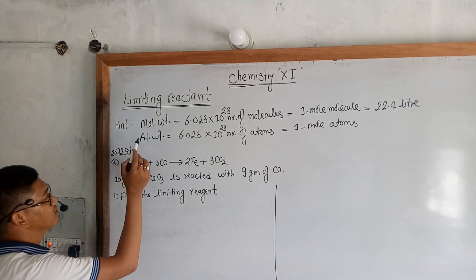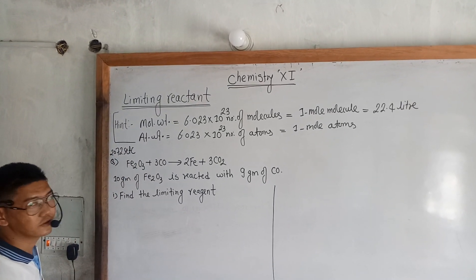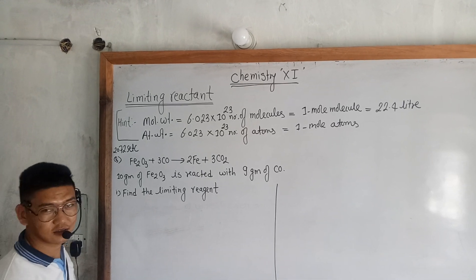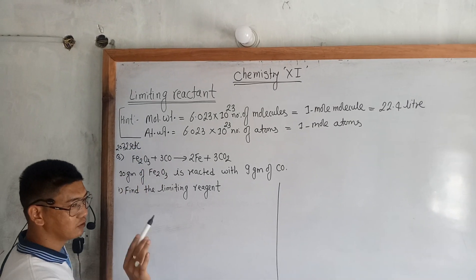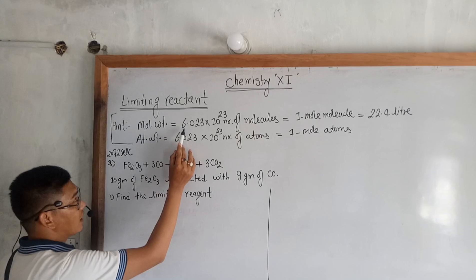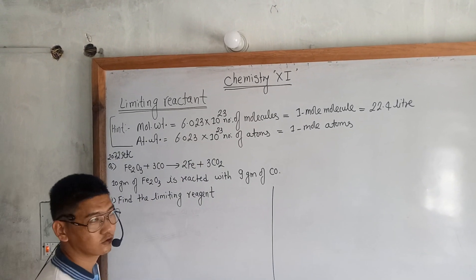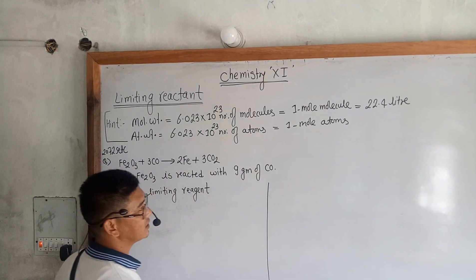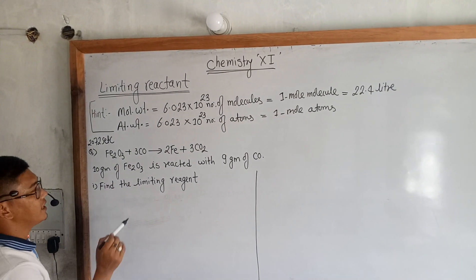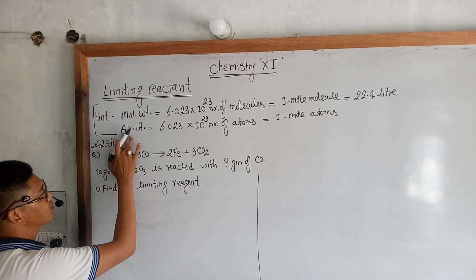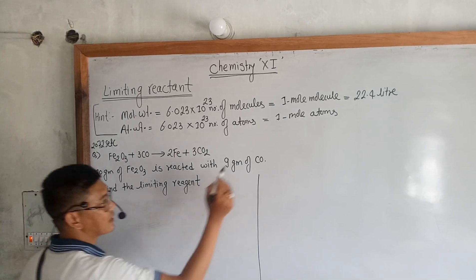I am sure you are familiar with the rates of study and the finals. The hint is that the weight is 6.023 — so atomic weight: 6.023 times 10 to the power of 23 atoms, and the atomic weight.